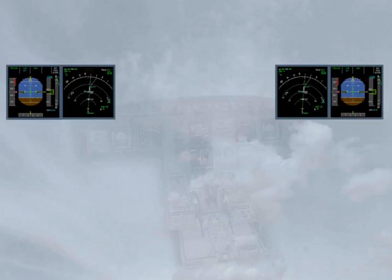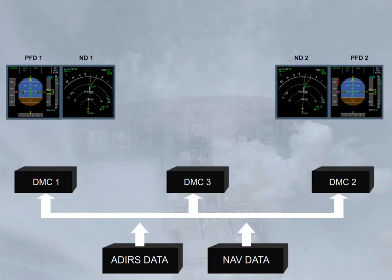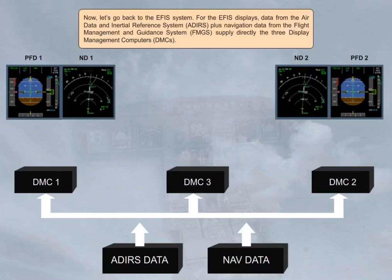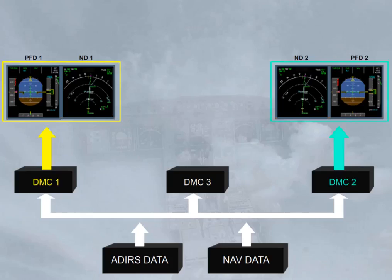Now let's go back to the EFIS system. For the EFIS displays, data from the Air Data and Inertial Reference System (ADIRS), plus navigation data from the Flight Management and Guidance System (FMGS), supply directly the three Display Management Computers (DMCs). The three identical DMCs process the data and generate the images to be displayed. In normal operation, DMC1 supplies EFIS information to the captain's PFD and ND, DMC2 supplies the first officer's PFD and ND, and DMC3 is available as a backup.